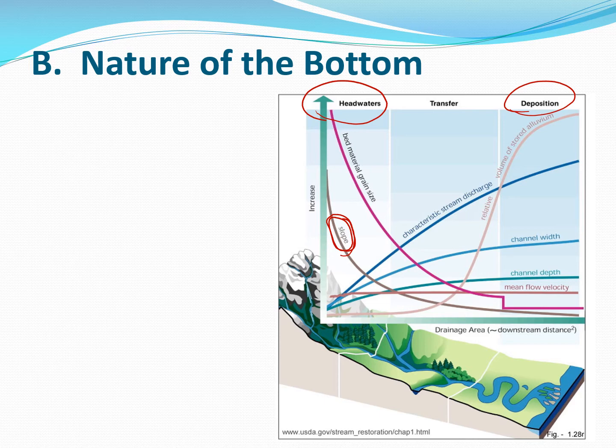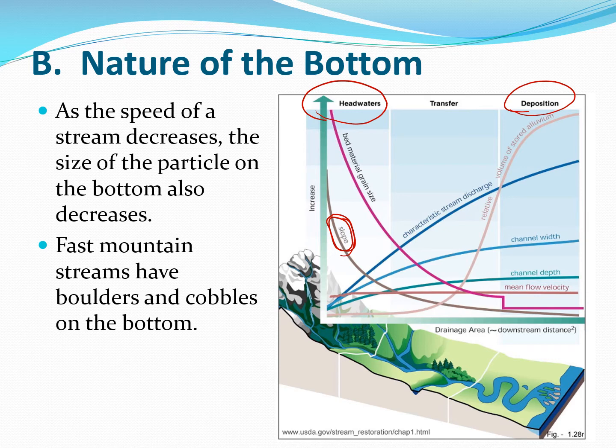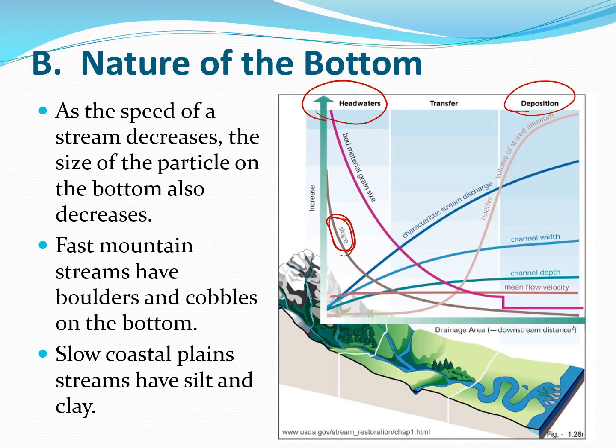Up in the headwaters, fast-moving streams are going to have boulders and cobbles on the bottom — boulders being really big, cobbles being the size of maybe a football. But as the stream decreases in speed as the slope decreases, it has less energy. When you get down to places like the coastal plains in Williamsburg, the streams have long left all the boulders and cobbles back in the mountains. The only things they're carrying are the smallest particles — silt and clay — which is why our streams tend to have muddy bottoms.